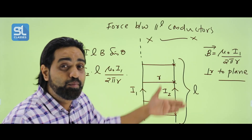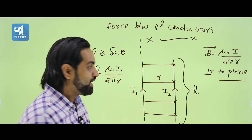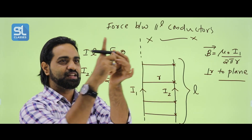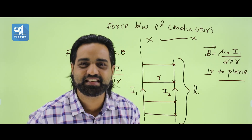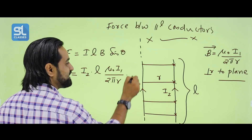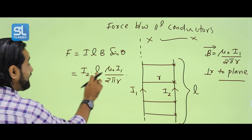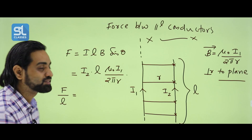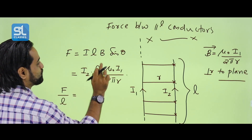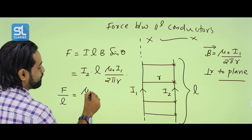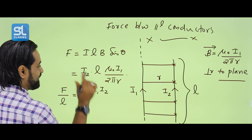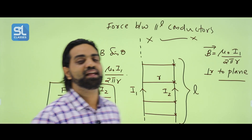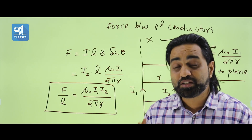The force per unit length, F by L, equals I2 × μ₀I₁ by 2πR. This is the force between parallel conductors.